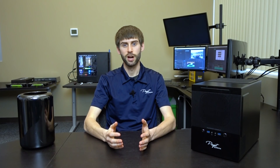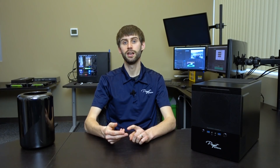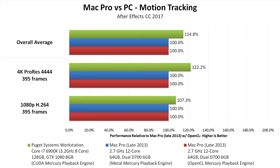The last thing we want to talk about is motion tracking. We timed how long it took to track across 390 frames with both 1080p and 4K footage. Motion tracking doesn't actually utilize the video card, so the Mac Pro with Metal and OpenCL actually performed identically. At 1080p, the PC was about 7% faster than the Mac Pro, and at 4K it was about 22% faster. Overall, we saw an average of about 15% performance gain with our PC versus the Mac Pro.